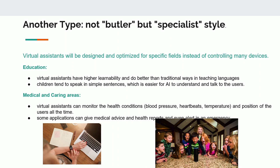The first application area is education. Virtual assistants have higher learning ability and do better than traditional ways in teaching languages. Children tend to speak in simple sentences, which is easier for AI to understand. In the medical and caring area, virtual assistants can monitor health conditions — blood pressure, heartbeats, temperature, and position of users at all times. Some applications can give medical advice and health reports, and even alert in an emergency.